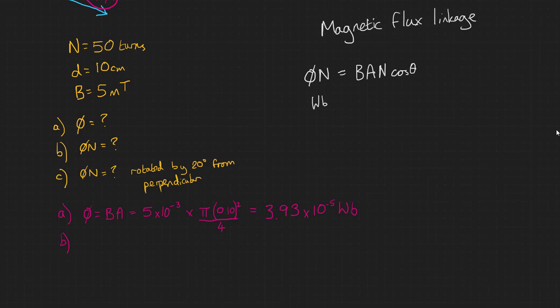Part B, we're looking for the flux linkage. So this time we need to account for the number of turns on our wire. So we can take our flux that we've just calculated, multiplied by n, our number of turns, which here is 50, gives us 1.96 times 10 to the minus 3 Webers.